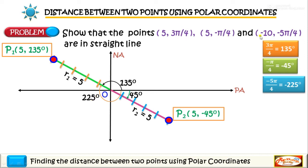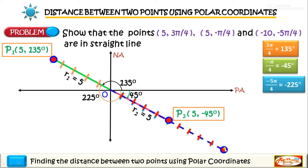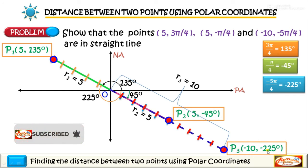Since r3 is negative 10, we measure in the opposite direction of this line. From the pole we draw a dashed line and count 10 units: first, second, third, fourth, fifth, sixth, seventh, eighth, ninth, and tenth unit. This is point 3, and that distance is r3 = 10. So the given point three has coordinates (-10, -225°).